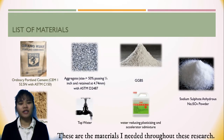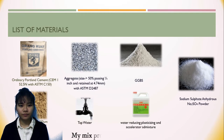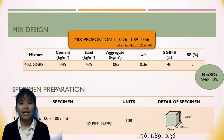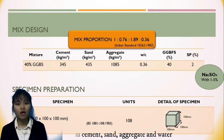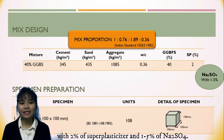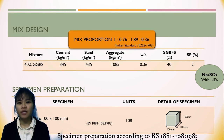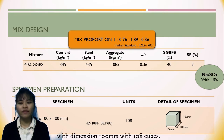These are the materials needed throughout this research. My mix proportion is 1 to 0.76 to 1.89 to 0.36 as cement, sand, aggregate, and water, with 2% of superplasticizer and 1 to 5% of sodium sulfate. The specimen preparation is according to BS 1881 Part 108, with dimensions of 100 mm cube.